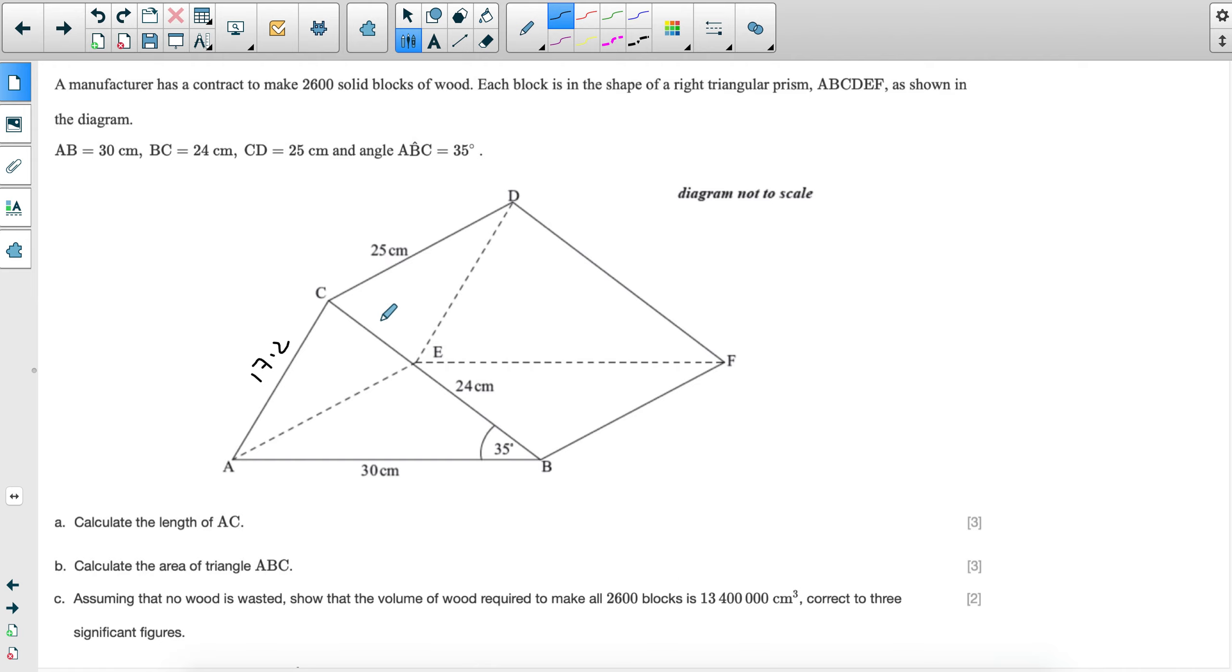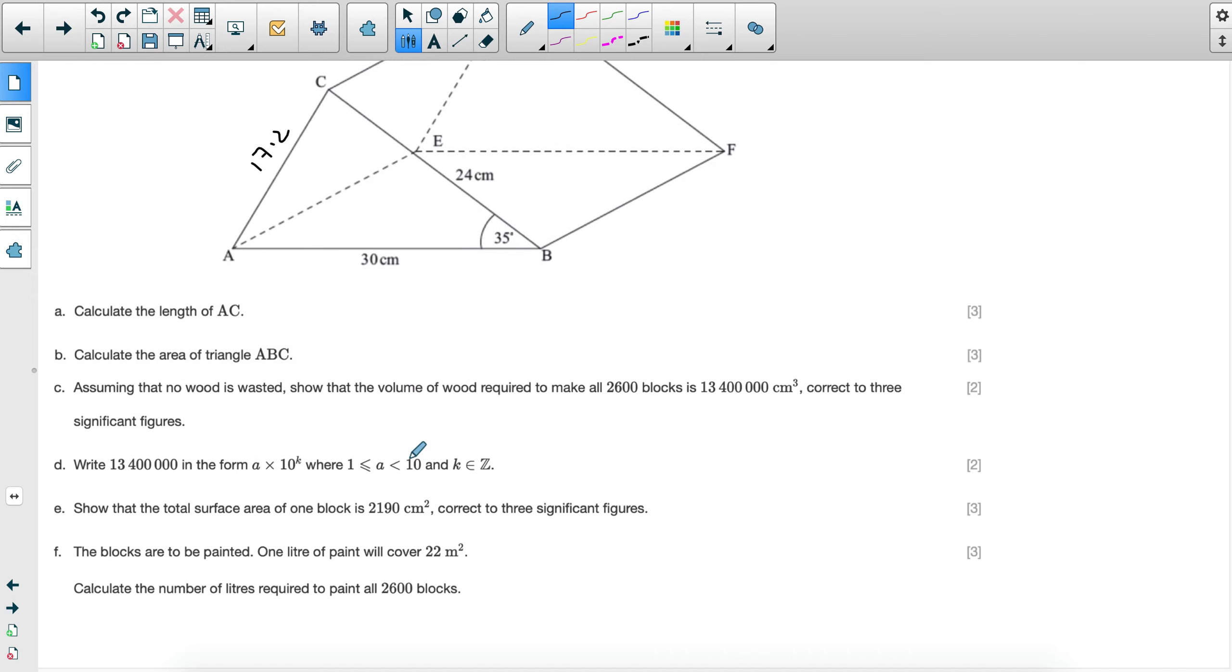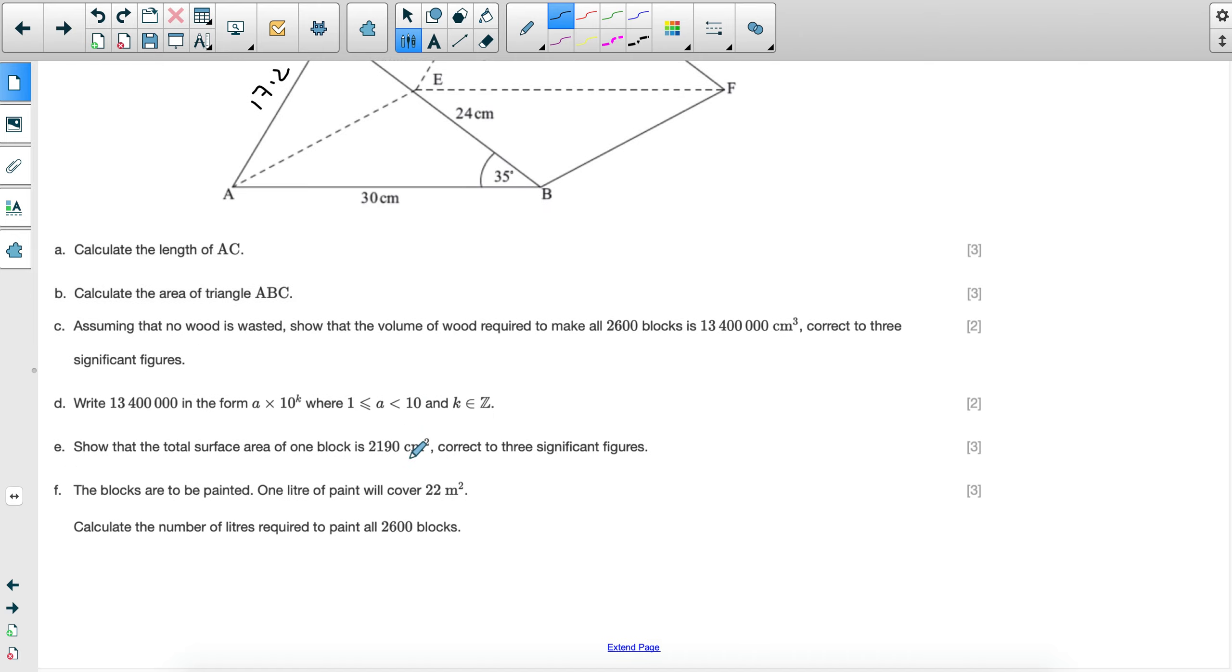Let's go to part D. It says, write 13,400,000 in the form of A times 10 to the power of k, where A is greater than or equal to one, strictly less than 10, and k is an integer. Really complicated, fancy way of saying just write it in scientific notation. So you need to write it in standard form. Standard form means that the first number, the A, your first digit, it could be a decimal. It's fine if it's a decimal, but as long as it's less than 10. Now, how can I make this number appear less than 10? Well, if the decimal place is here, remember it's a whole number, then if I move it to this point, I can actually make it look less than 10.